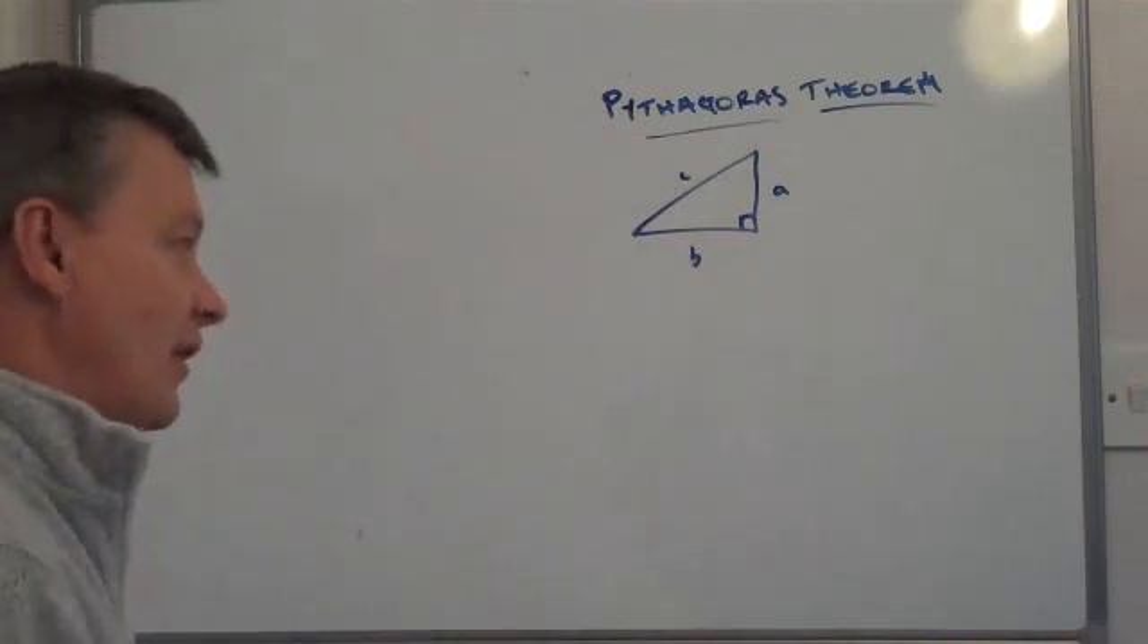What Pythagoras Theorem says is that if I square this side and that side, it will equal the total of the square of this side. Now it only works with right angle triangles, and to write it out mathematically what we say is A squared, which is this side, plus B squared, which is this side, equals C squared, which is this side.